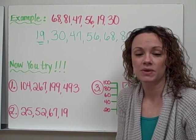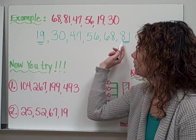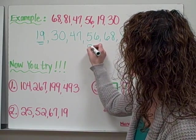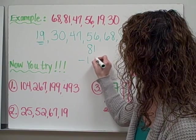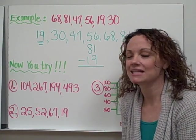And to find the range, we need to find the difference between the smallest and the greatest number. So to find the difference, we subtract. So I'm going to set up a subtraction problem. 81 minus 19.